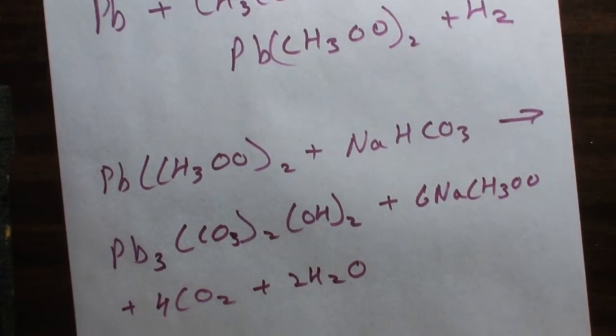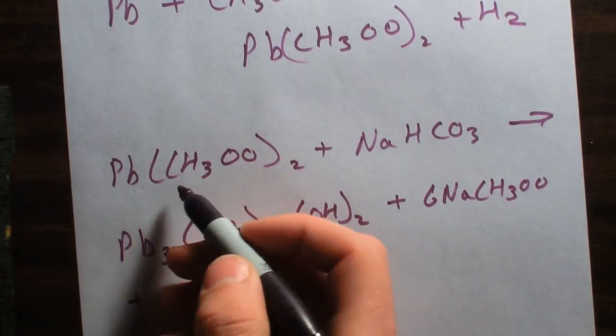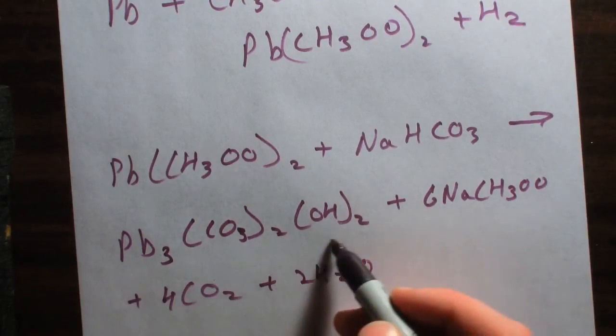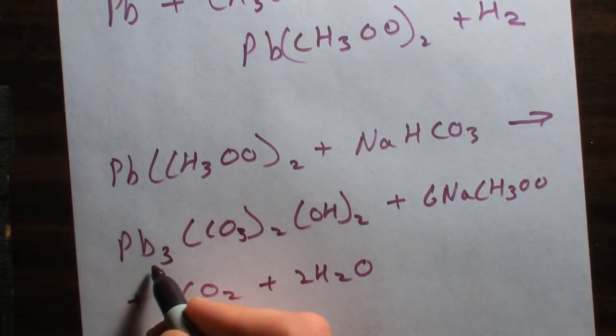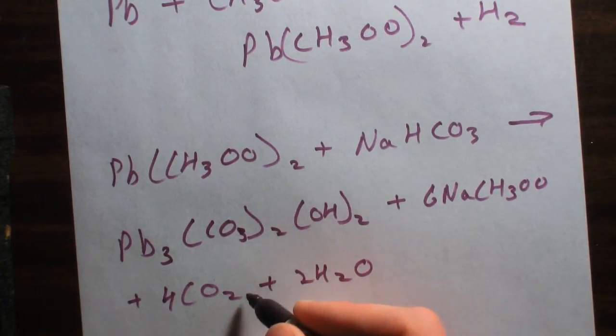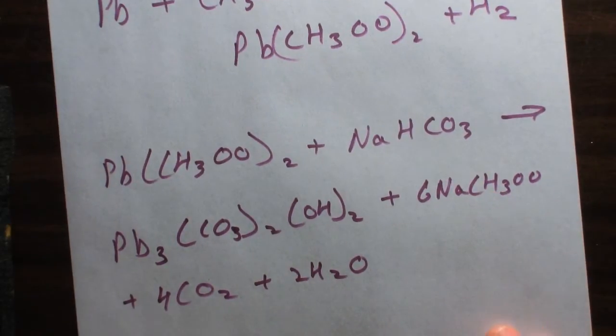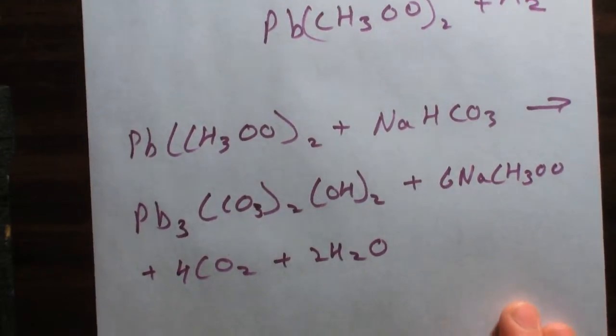So it's kind of a long reaction, but simply it's just taking lead acetate reacting with sodium bicarbonate and we're forming this insoluble basic lead carbonate or white lead. And all this other stuff is going to be gas, water, it's going to be liquid, and then this will stay in solution so we can just filter this off and dry it and continue on.